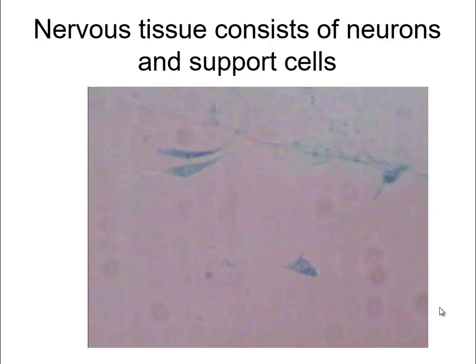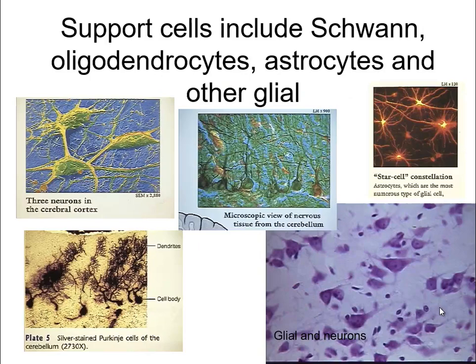Nerve cells are called neurons, and then you have support cells that nourish the neurons, take care of them, and interconnect them. You have cerebral cortex neurons, oligodendrocytes, and here's tissue from the cerebellum. Astrocytes are named because they look like stars. Then you have the Purkinje cells of the cerebellum and your glial and neuron cells. So you're going to have not so many neurons but a lot of support cells.